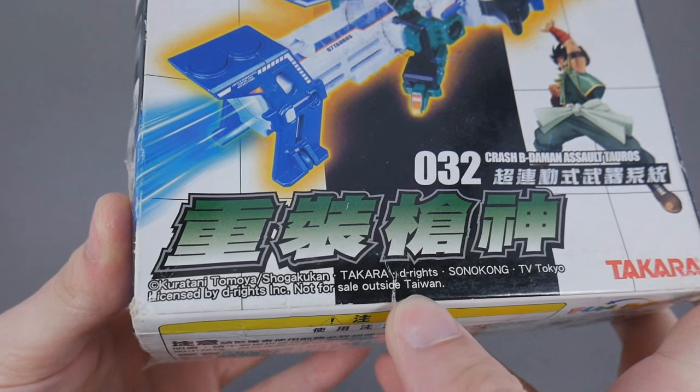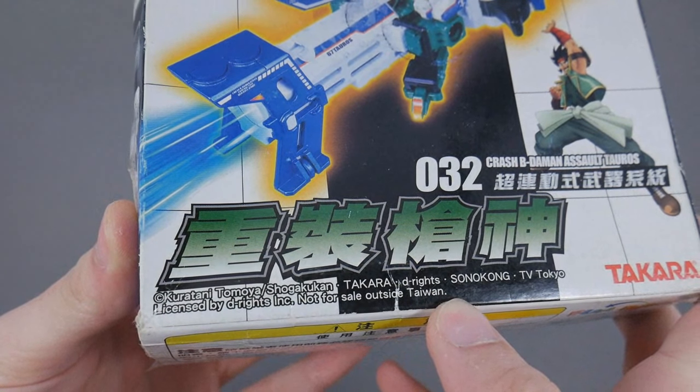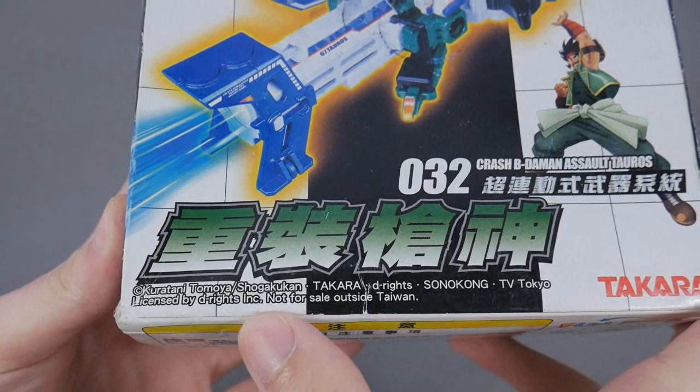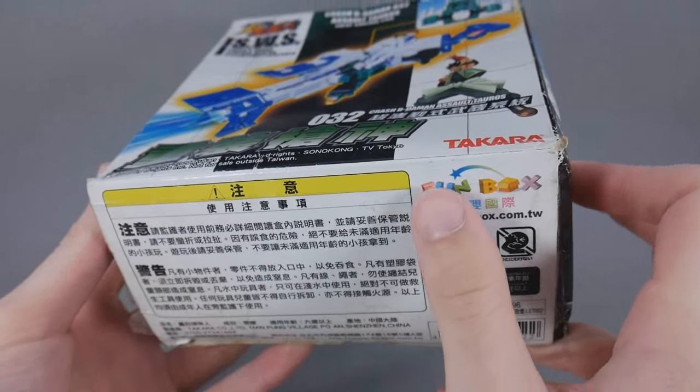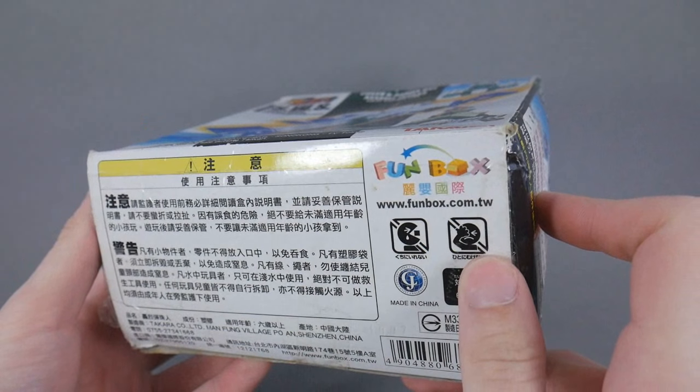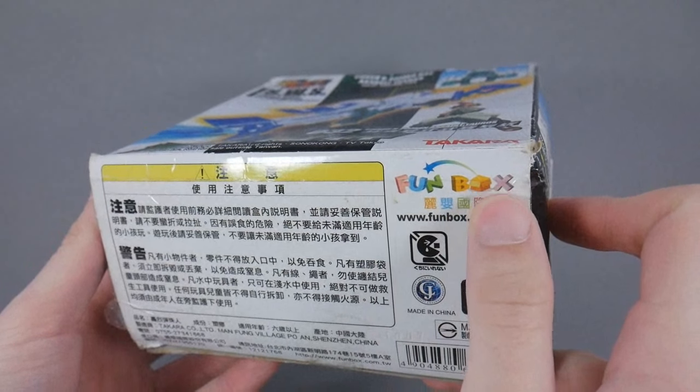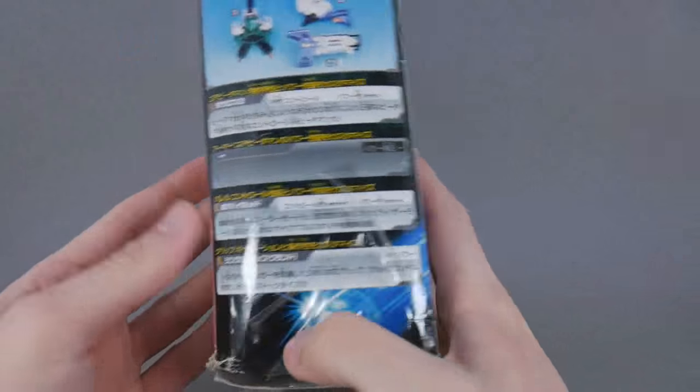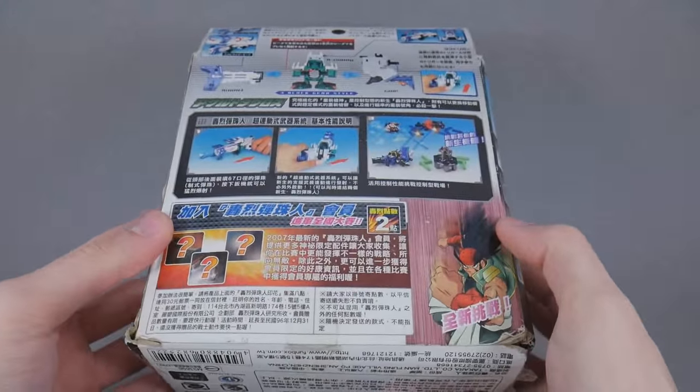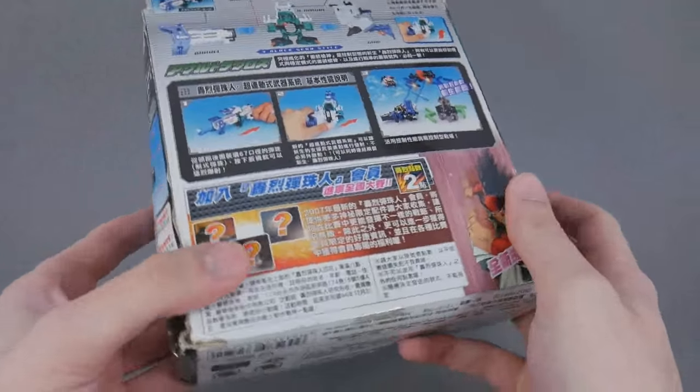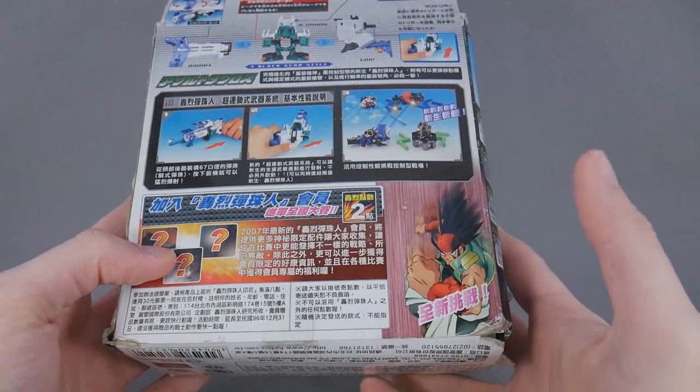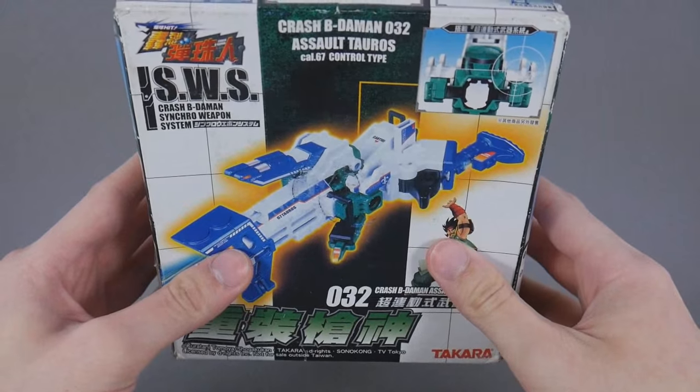One interesting thing about the box here is that this is the Taiwanese version. It says not for sale outside of Taiwan, distributed by Funbox. Otherwise, aside from those two things, it looks identical to the Japanese packaging. But there is Juby down below there.